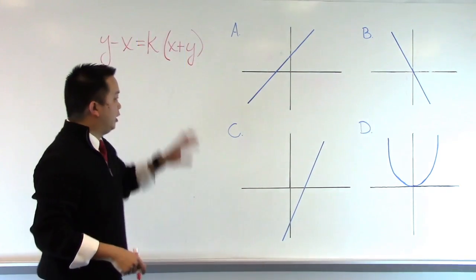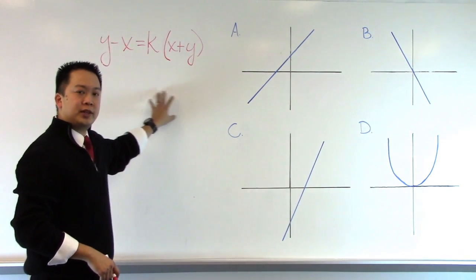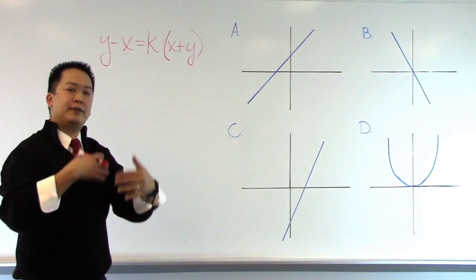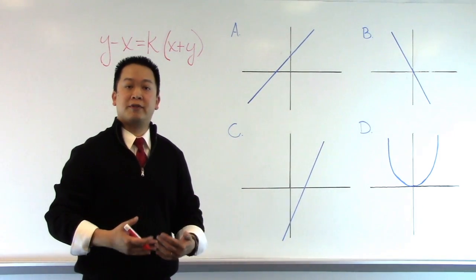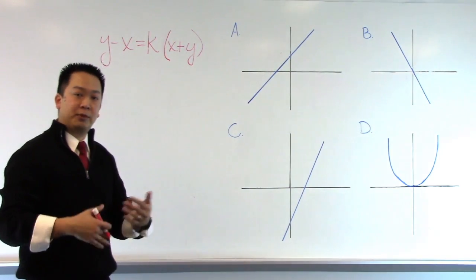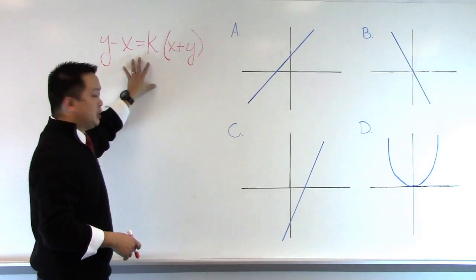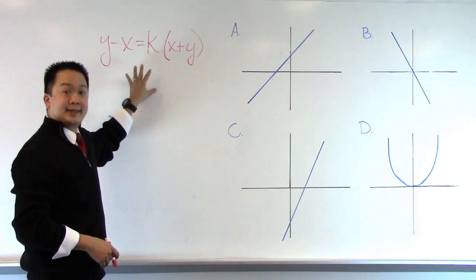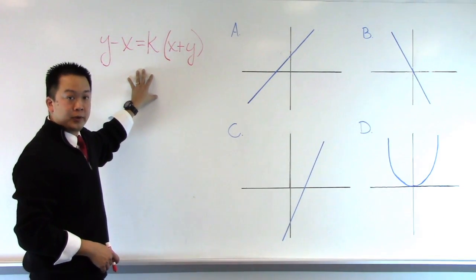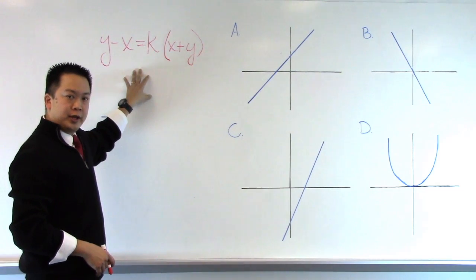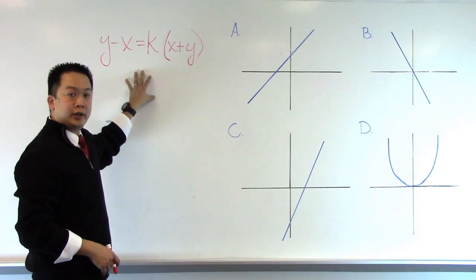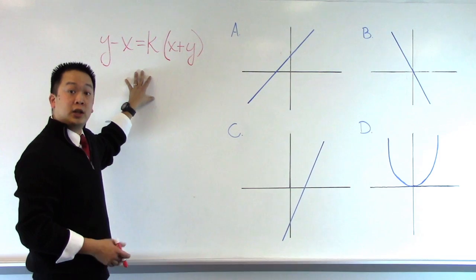For our Princeton Review students, when we see a problem like this, let's see if we can eliminate any answer choices right off the bat just from recognizing some of the properties in the equation. In this particular equation, we do not see any sort of exponents, no twos, no little twos up there, and so therefore we know that this is going to be a linear equation or, in essence, a line.